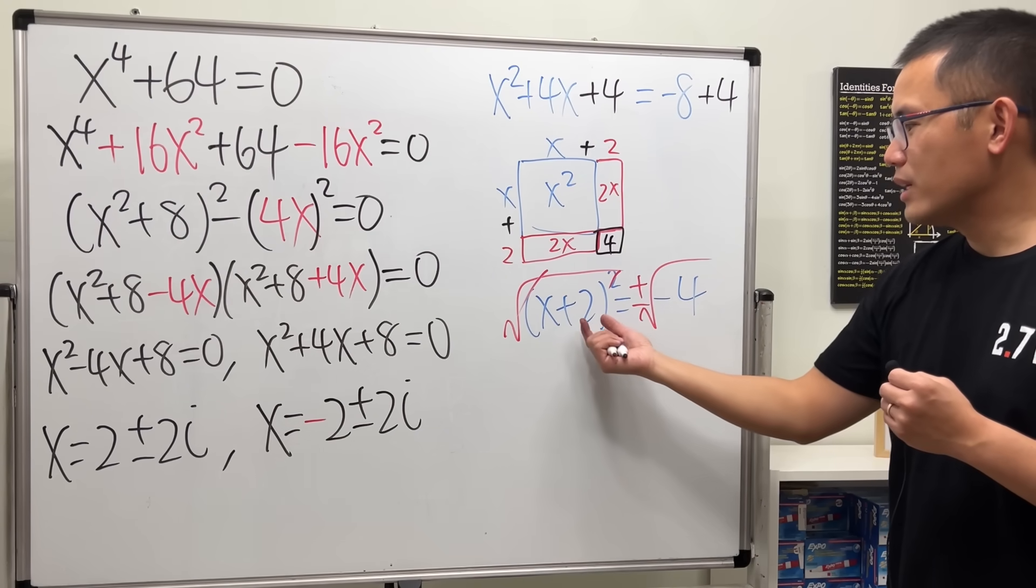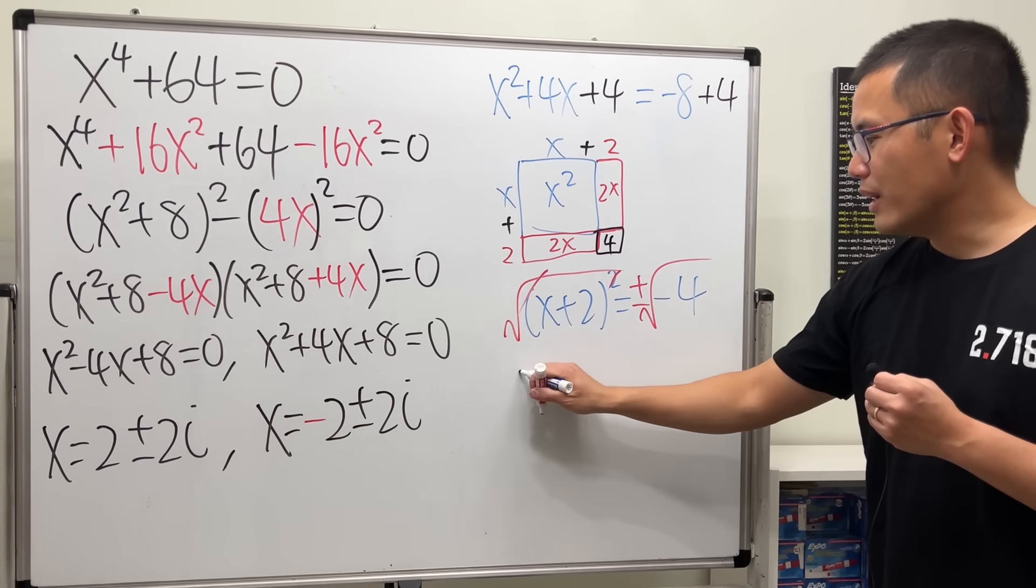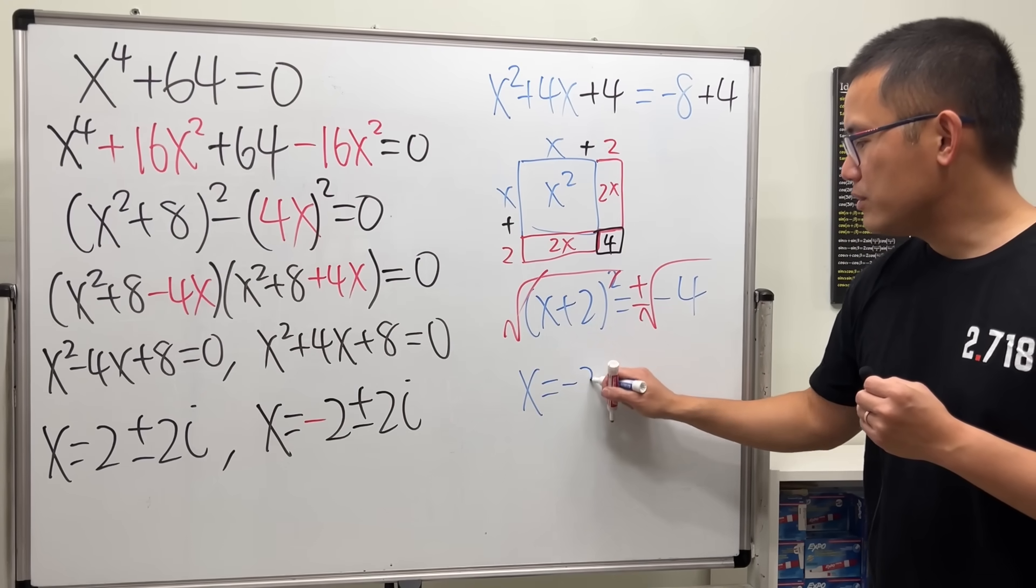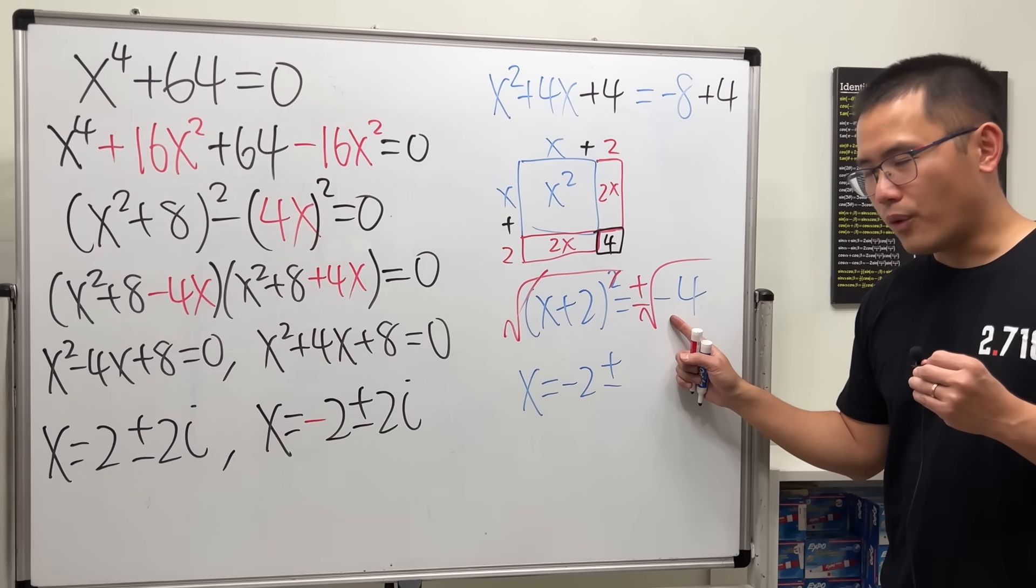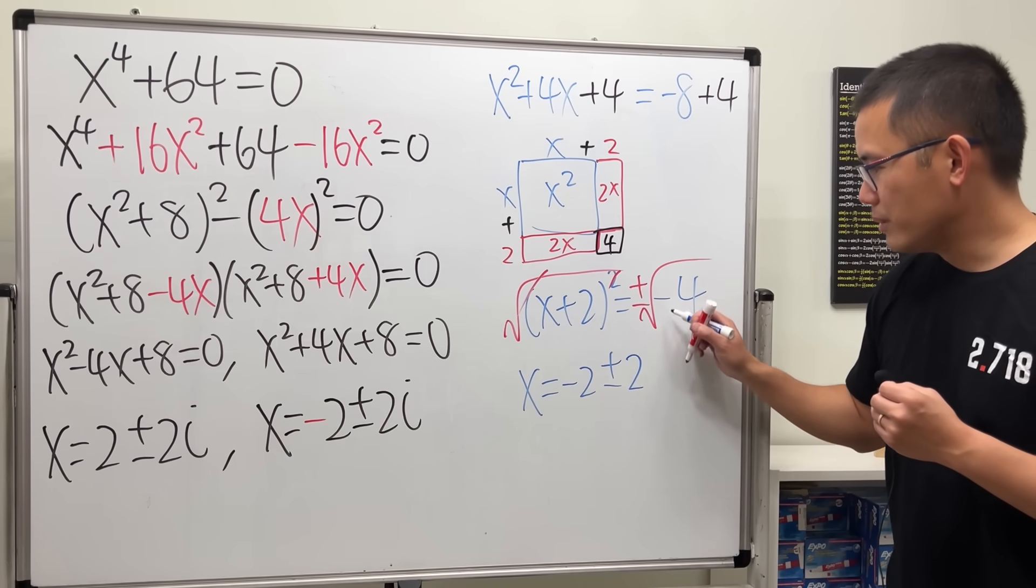x plus 2 is equal to this. We can put the 2 to the other side. So, x equals negative 2 plus or minus square root of negative 4 is going to be 2i because of negative.